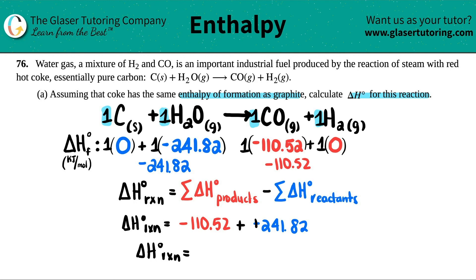And I get 131.3. And now the units of ΔH is always kilojoules per mole, especially if you're using the tables, and you're done. So what's the ΔH? Slightly endothermic because it's a positive number.